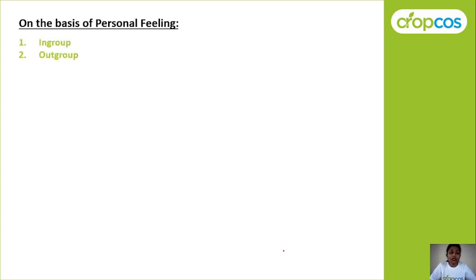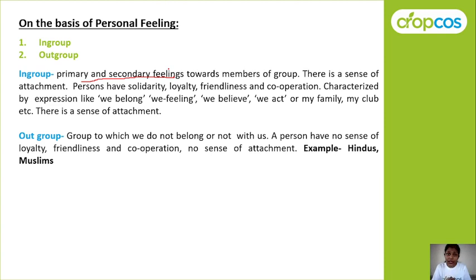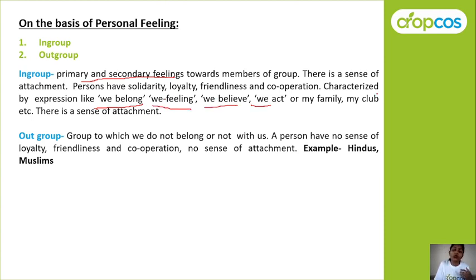Next is classification on the basis of personal feeling — in-group and out-group. In an in-group, members have primary and secondary feelings towards each other, there is a sense of attachment, people are united, they have loyalty, friendliness, and cooperation. An important point to remember is the 'we feeling' — we believe, we act, my family, my club — everywhere there is a 'we feeling.'